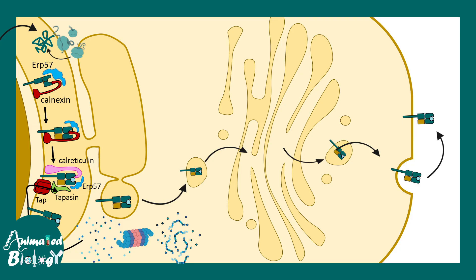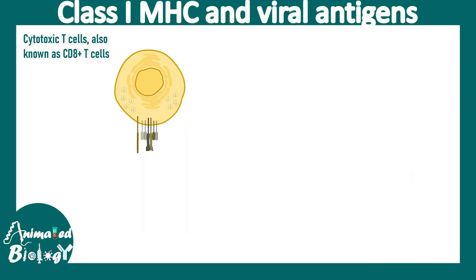What is the significance of displaying self peptides on the class 1 MHC molecule? These MHC-bound peptides give the cell a self-recognition capability — it's like a flag signaling that everything is okay. Additionally, in cases of virus-infected cells, some viral peptides are also presented to CD8-positive T cells by the class 1 MHC molecule.